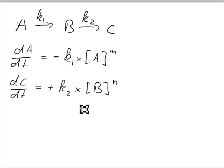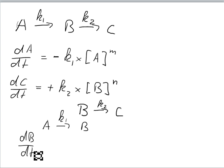B is both produced by k1 and consumed by k2. So we can write dB over dt equals the production from the first reaction.